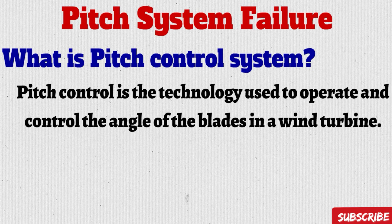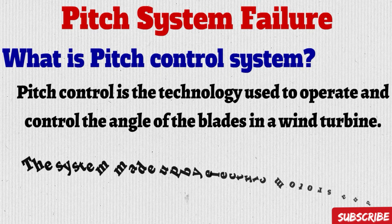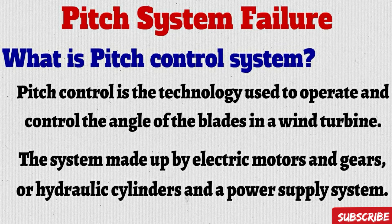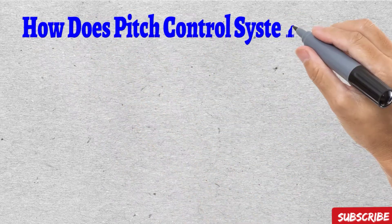In this video I focus on pitch system failure because it is the major reason for wind turbine collapse. First we need to understand what a pitch control system is. Pitch control is the technology used to operate and control the angle of the blades in a wind turbine. Nowadays most wind turbines use micro pitch control, which includes electric motors, drives, mechanical gears, a power supply system, and some turbines also have a hydraulic pitch system.